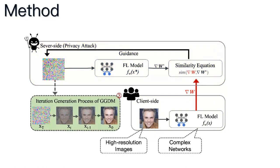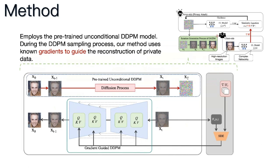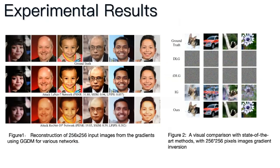The specific generation process is as follows. In the Gradient-Guided Diffusion Model, we begin with a pre-trained DDPM model as our base. To ensure accuracy during image generation, we employ a similarity function to compare the generated image gradients with the original client gradients. Lastly, we use the stochastic differential equation to guide the process, aiming for precise replication of private data.